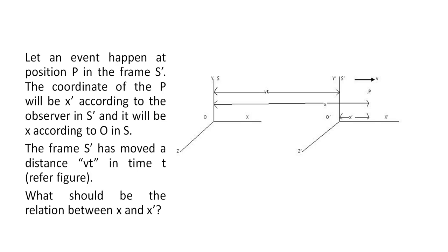Now let an event happen at position P in the frame S'. These two frames can be compared to motorbikers — S' is one of the motorbikers wearing a cap. He has thrown the cap, and this cap-throwing is the event. The coordinate of point P will be X' according to the observer in S', and it will be X according to observer O in S. The frame S' has moved a distance vt in time t.